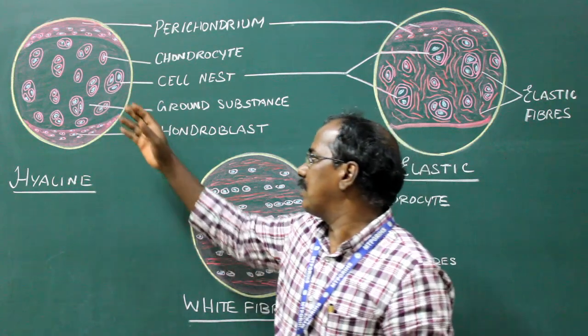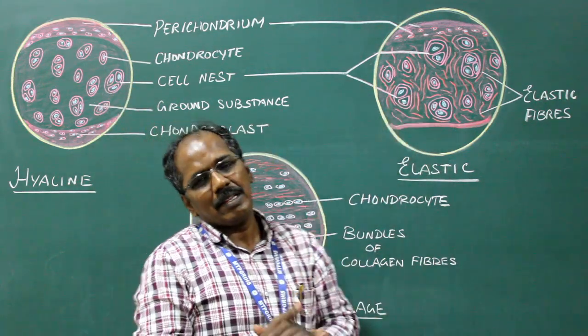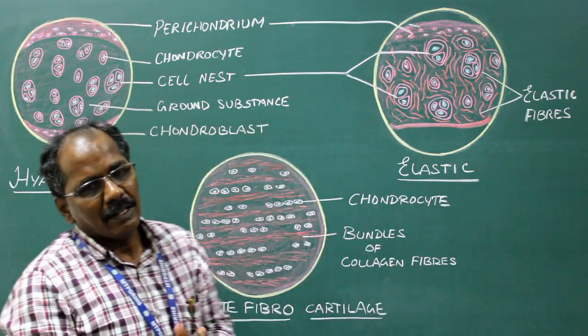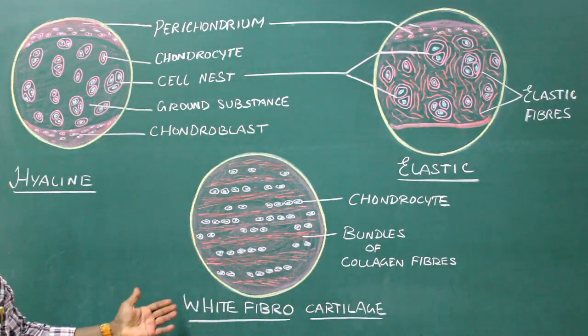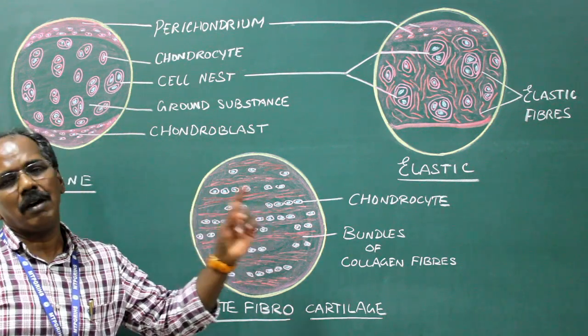Presence of cell nest in hyaline cartilage and elastic cartilage. The cells in white fibrocartilage are arranged in a chain or in a row form.